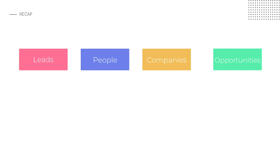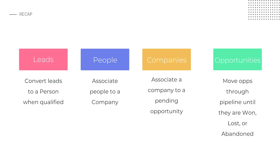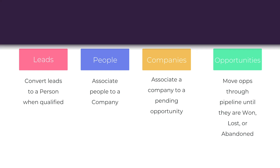Let's pull it all together and recap what we've learned so far. In a use case that utilizes all record types, you'd start by creating a lead. When you convert the lead to a person record, it might have a company associated with it. The person might also have an opportunity associated with them. You move the opportunity through the stages of your pipeline until it is marked as won, lost, or abandoned. This is the standard, typical, repeatable process in a Copper workflow. To keep yourself organized and to keep the workflow moving, you'll want tools to help manage your time and leave a paper trail of how you spend it.